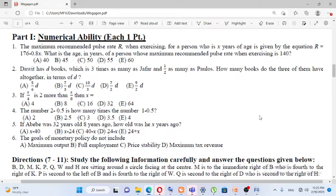The maximum recommended pulse rate R when exercising for a person who is X years of age is given by the equation R is equal to 176 minus 0.8X. What is the age in years of the person whose maximum recommended pulse rate when exercising is 140?